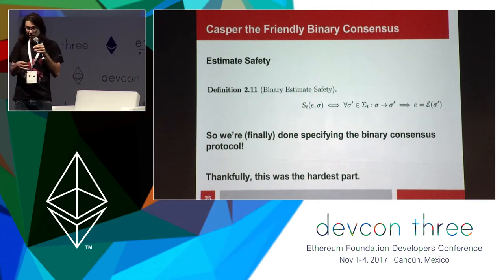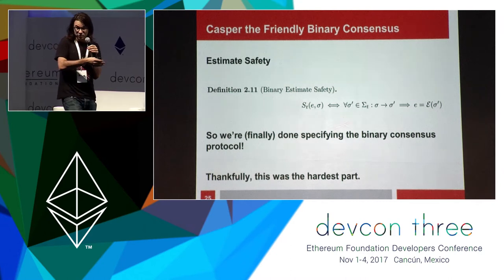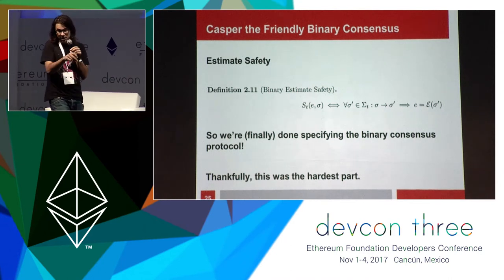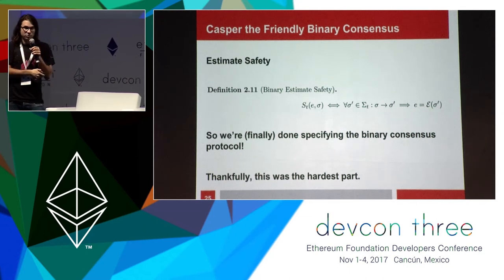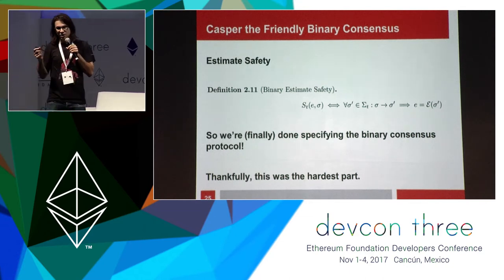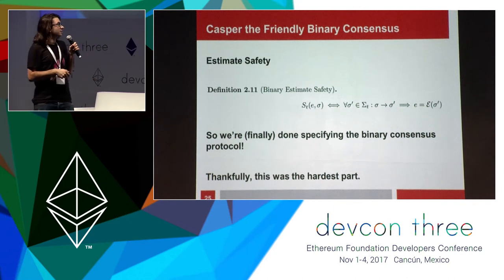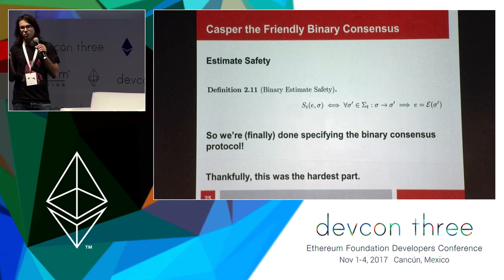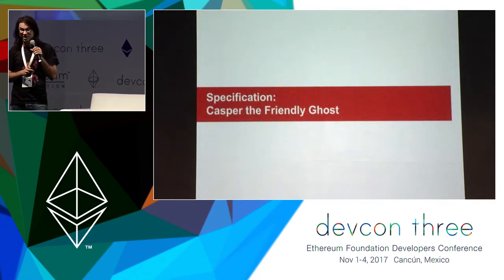The binary estimate safety basically means that an estimate is safe given some fault tolerance in a state if, for all future states, that estimate is also returned by the estimator. There's a disinvariance: all future states will return zero, or all future states will return one. Because of how we constructed this, it satisfies our safety proof — they all have future states unless there are t faults, and if they have future states, they have consensus safety. So we have a binary consensus protocol with safety.